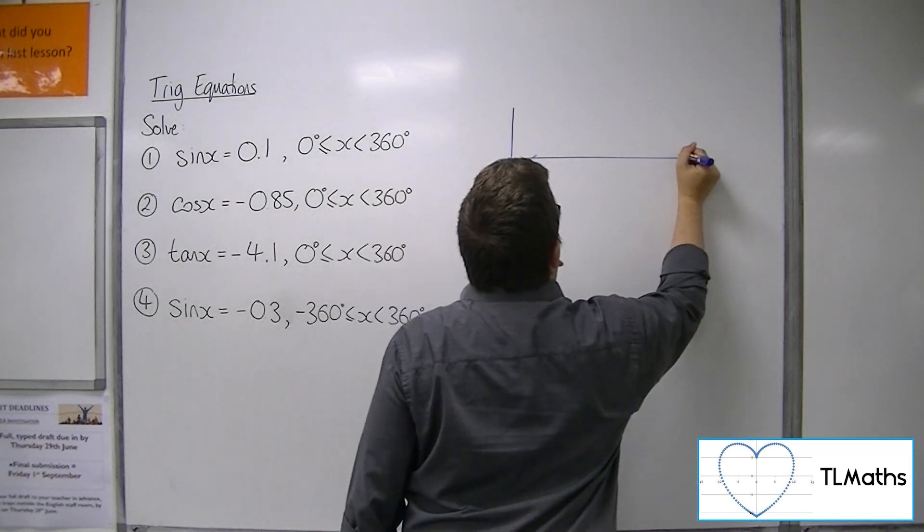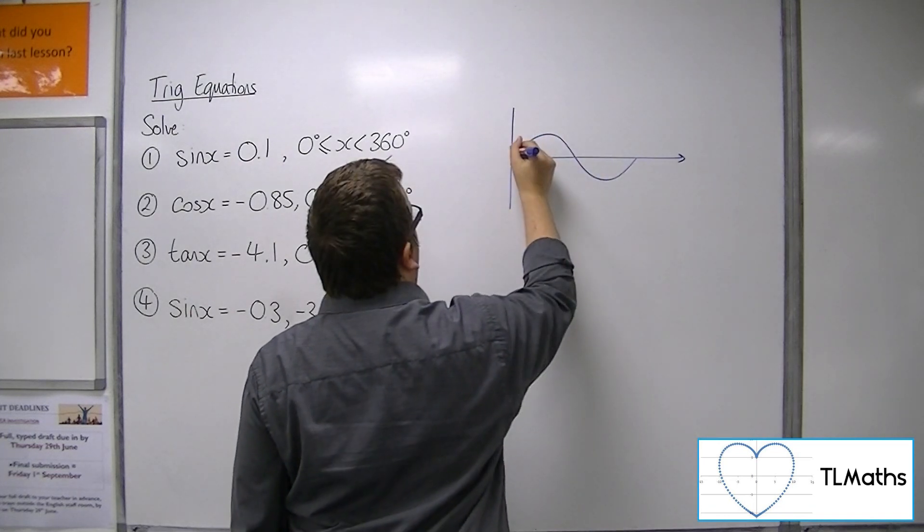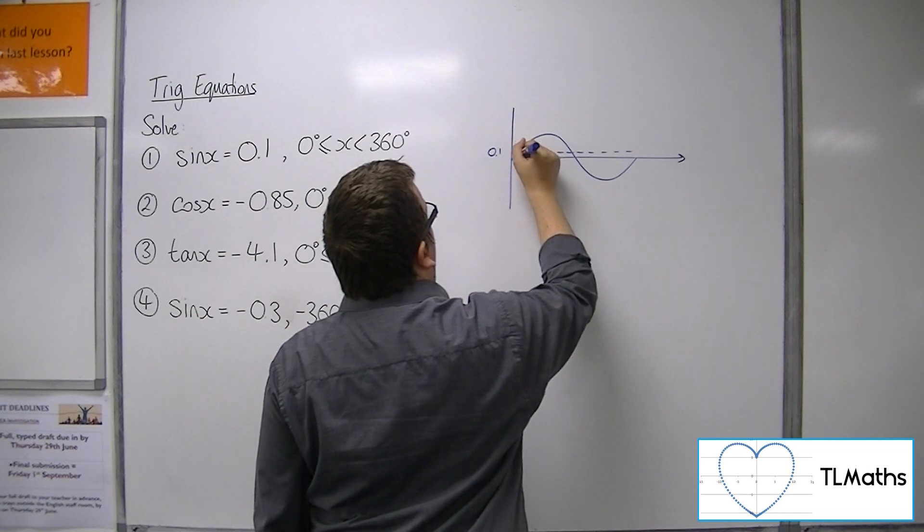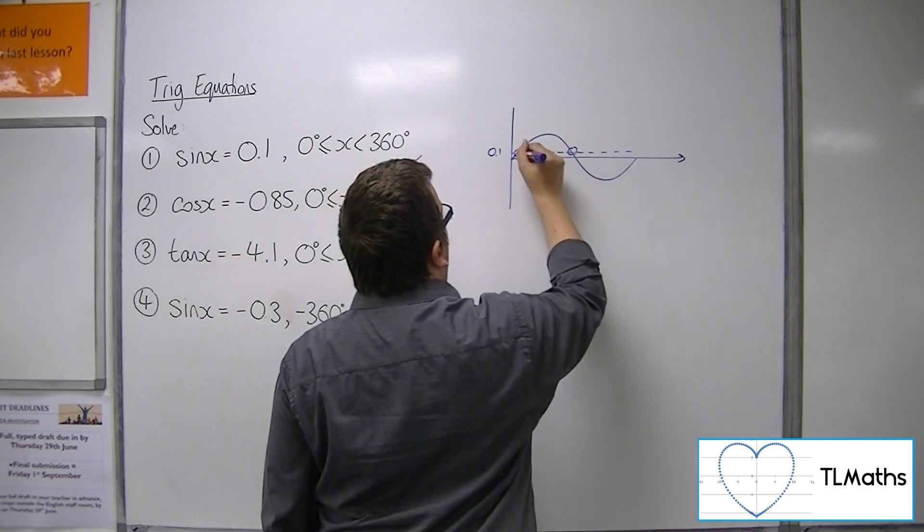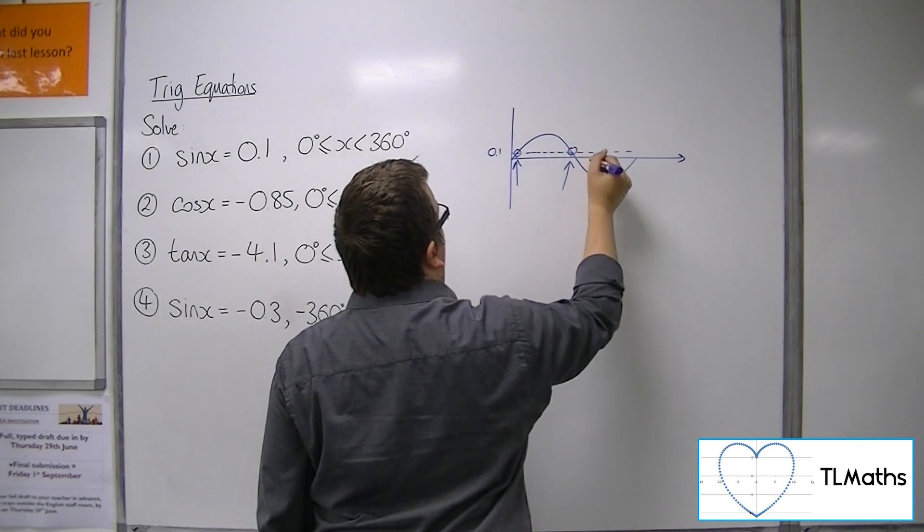So sine x equals 0.1 for the first one. We're going to quickly do a little sketch of sine. 0.1 will be about there. It doesn't need to be accurate. So we're expecting two solutions here, one there and one there.